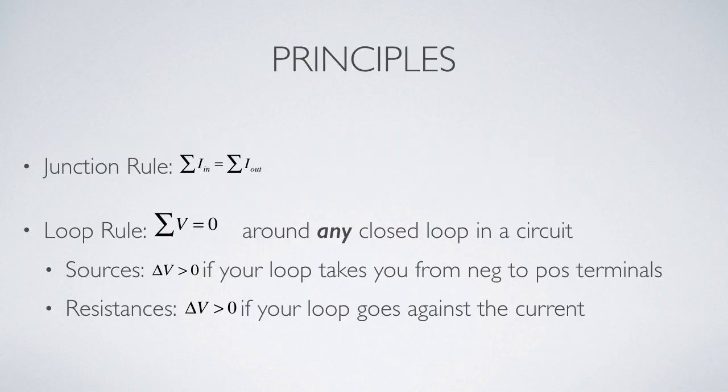We're using the two basic principles of circuit design, which are both derived from conservation laws. The junction rule is derived from conservation of charge, and the loop rule is derived from conservation of energy. The junction rule says that the sum of all currents flowing into a junction must equal the sum of all currents flowing out. The loop rule tells us that the sum of potential differences around any closed loop must be zero.